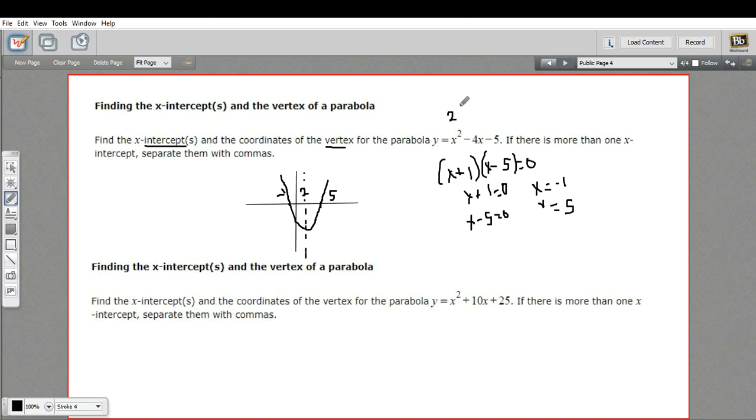And if I want to find the y value to get the coordinate, I would just put in 2 in my original equation. So 2 squared minus 4 times 2 is 8 minus 5. So 4 minus 8 is negative 4 minus 5 is negative 9.